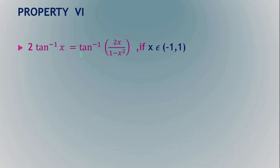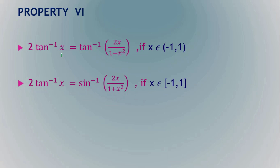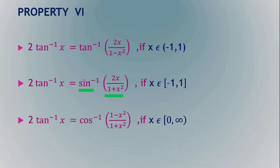The next property: 2·tan⁻¹(x) = tan⁻¹(2x/(1 − x²)), where x is in the open interval (−1, 1). This is also very important. Additionally, 2·tan⁻¹(x) can be written in terms of sin as sin⁻¹(2x/(1 + x²)), and in terms of cos as cos⁻¹((1 − x²)/(1 + x²)).